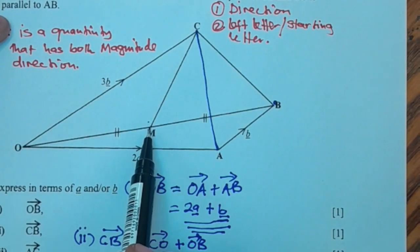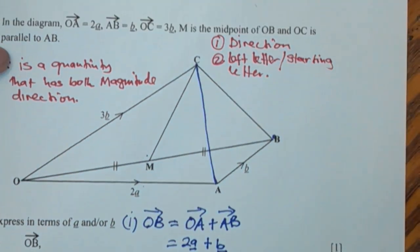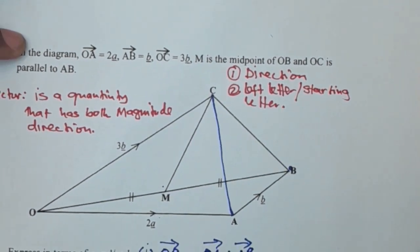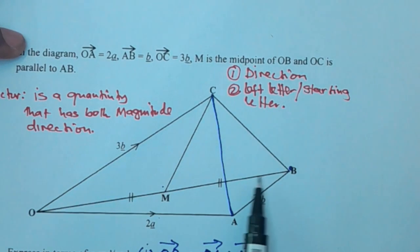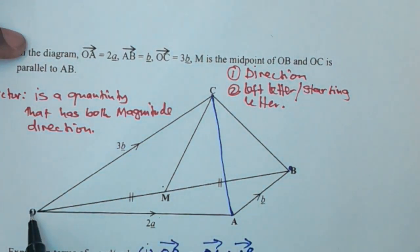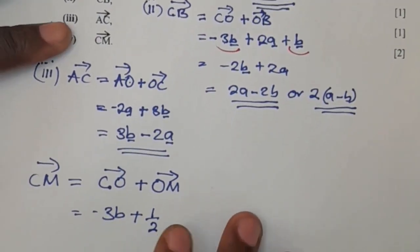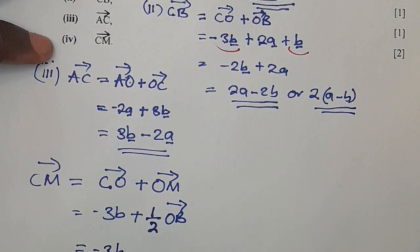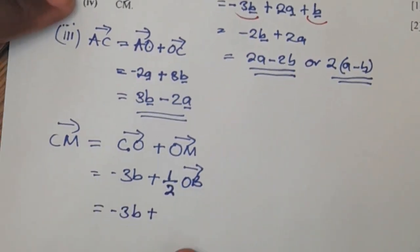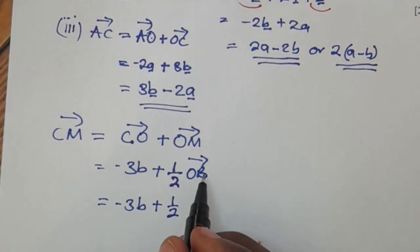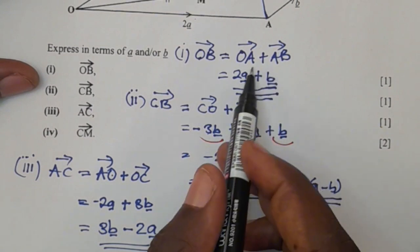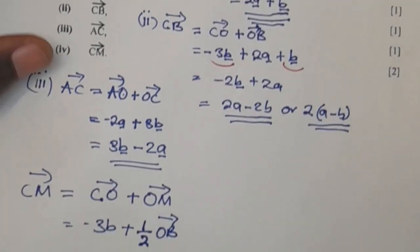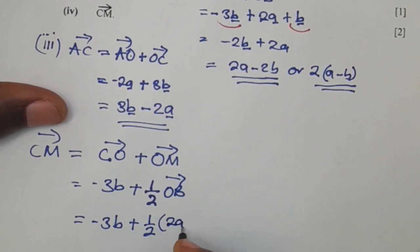OM, we don't know it at the moment, but remember, we have been given the important information to say this M here is the midpoint of OB. So since M is a midpoint of OB, it means that since we already know what OB is, then we'll have half OB, vector OB. We're going to have negative 3b plus half OB. What is OB? OB is 2a plus b. So half of 2a plus b.